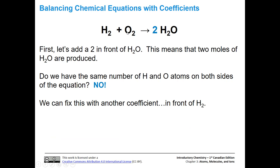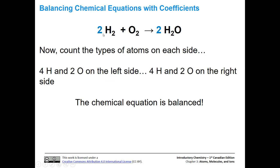Let's go ahead and balance our oxygen first. We have two oxygens on the reactant side. If we add a coefficient of two in front of the H2O molecule, then two times one gives us two oxygens on the product side. Now we don't have the same number of hydrogens — two times two gives four hydrogens on the product side, but only two on the reactant side. We can fix that by adding a two coefficient in front of hydrogen. So now we have four hydrogens plus two oxygens gives us four hydrogens and two oxygens. Our chemical equation is balanced.